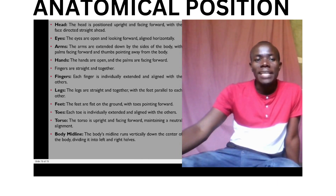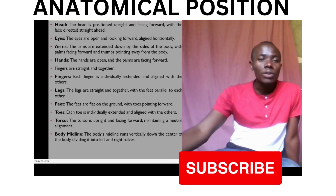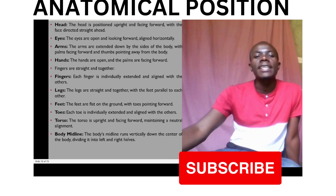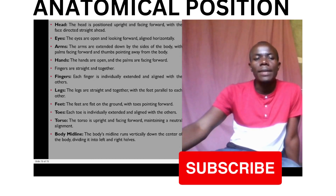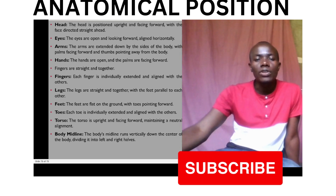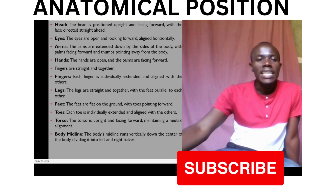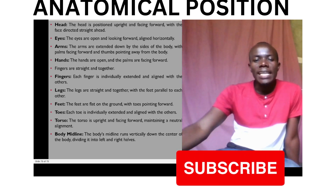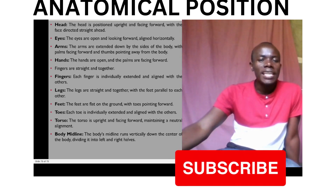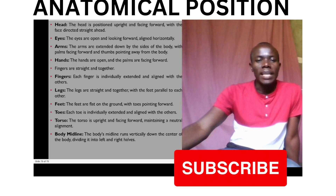The anatomical position is the universal language of anatomy. It allows us to describe body structures in standardized ways, regardless of individual variation. It forms the basis for understanding the directional terms that guide us through the body's landscape — terms like superior, inferior, anterior, posterior, and medial.